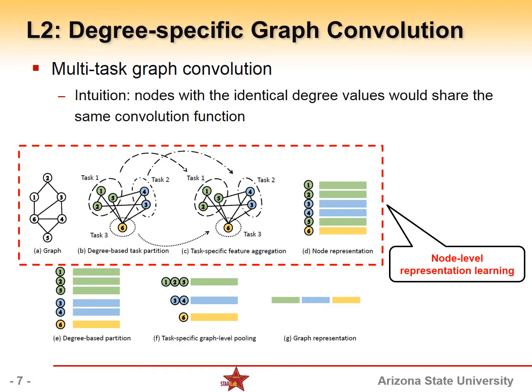In our paper, we give a degree-specific graph convolution to learn the graph. The basic intuition is that nodes with the same degree value should share the same convolution function because they are more likely to have the identical subtree structures. Considering taking the nodes with the same degree as one task, it can be seen as a multi-task feature learning for each convolutional layer.